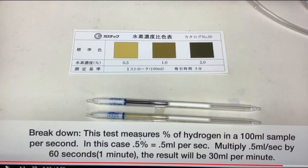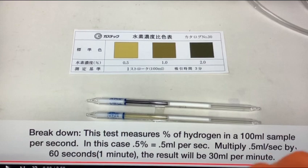But this test measures percentage of hydrogen in a 100 milliliter sample. So they take 100 milliliters of air per second. In this case, 0.5% equals 0.5 milliliters per second, multiply the 0.5 milliliters per second by 60 seconds, one minute, the result 30 milliliters per minute.